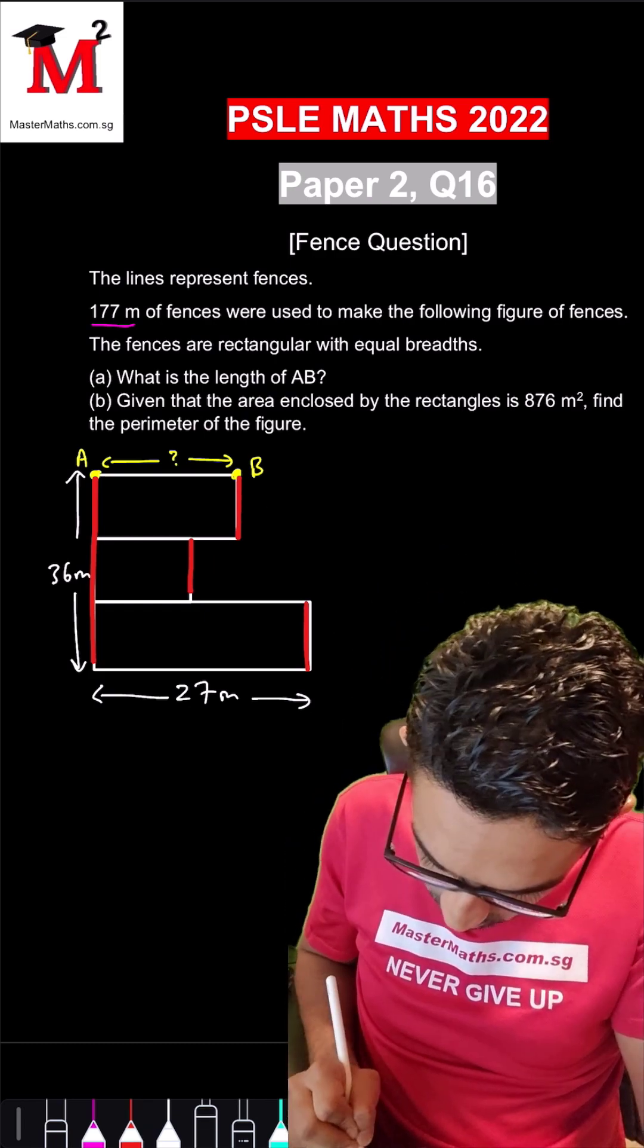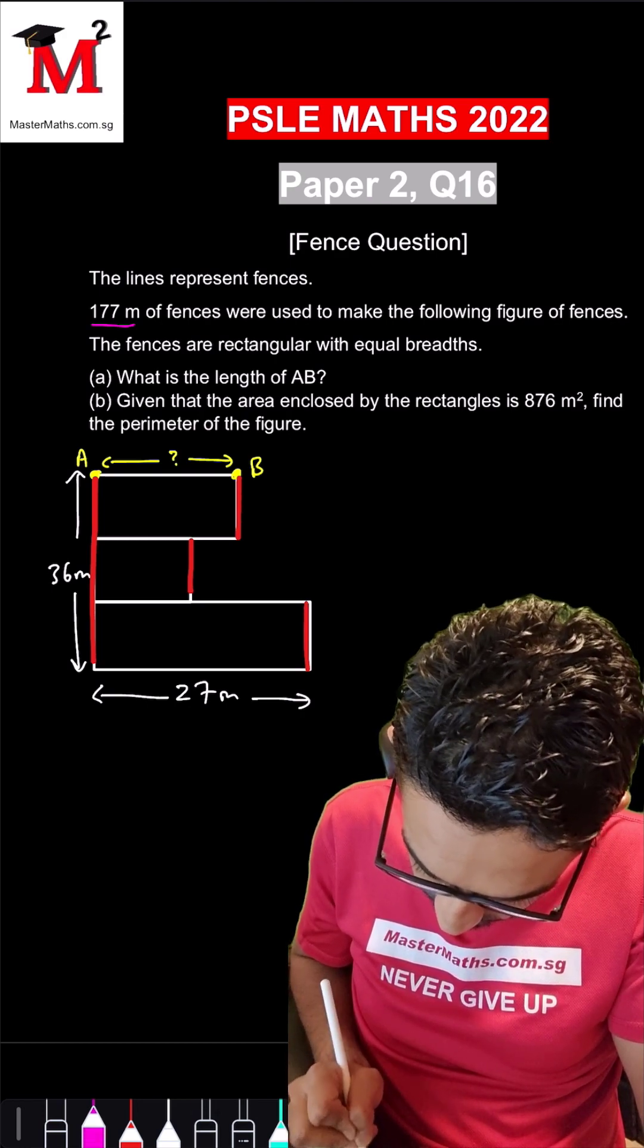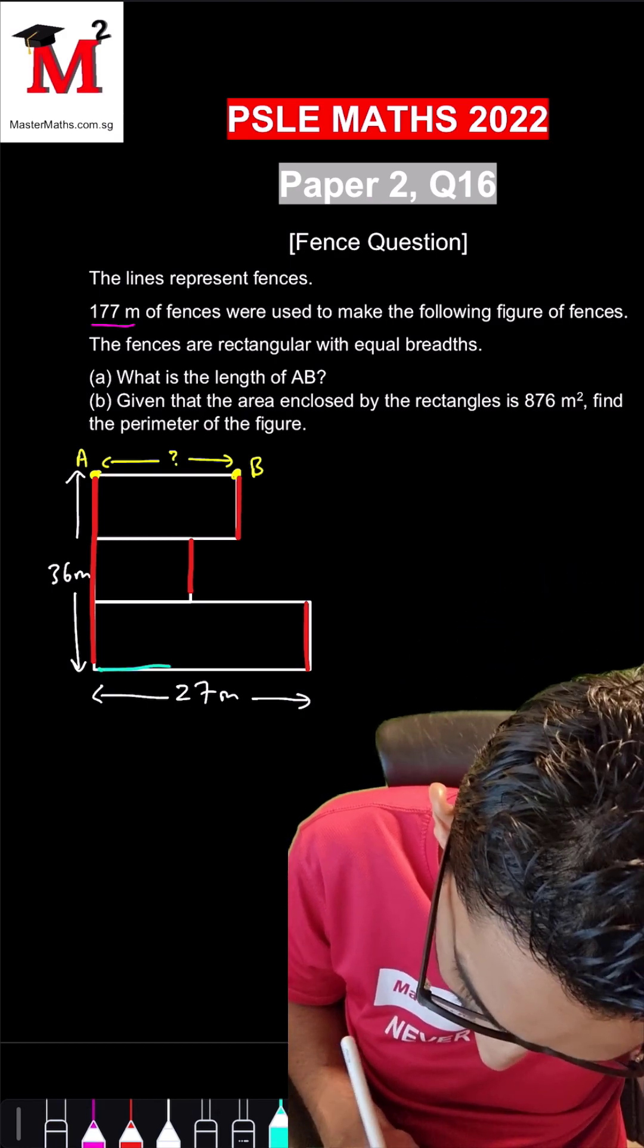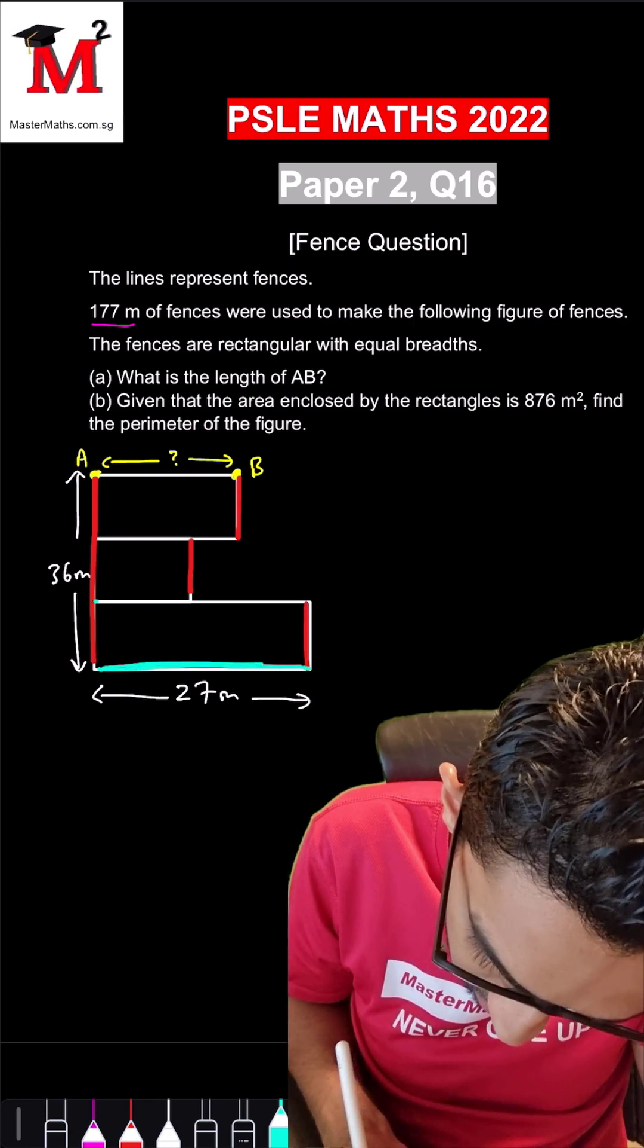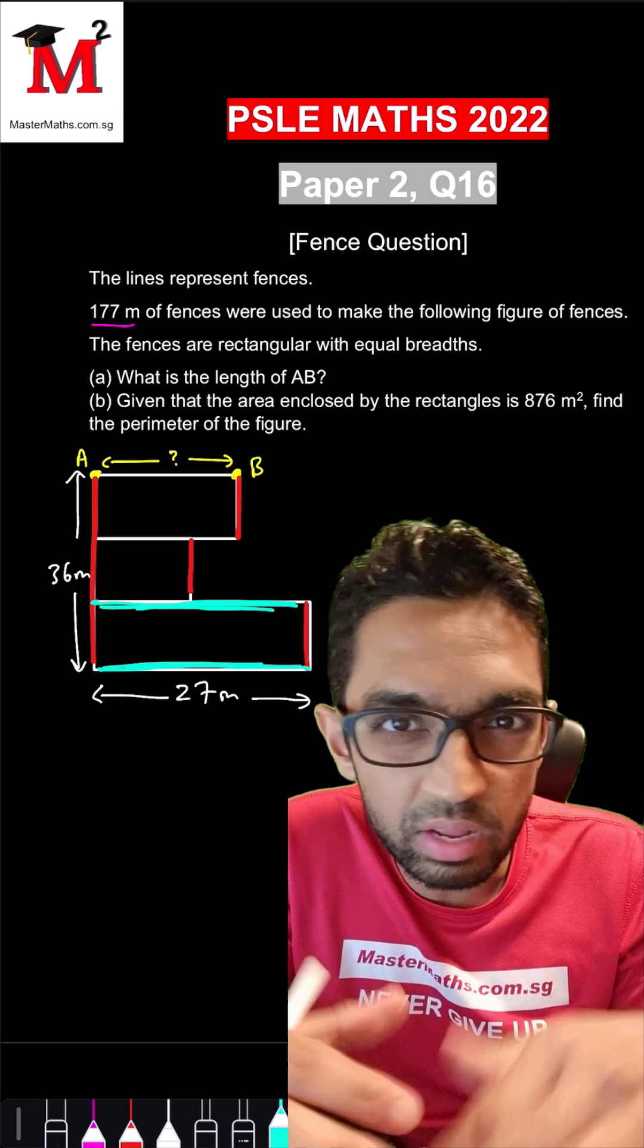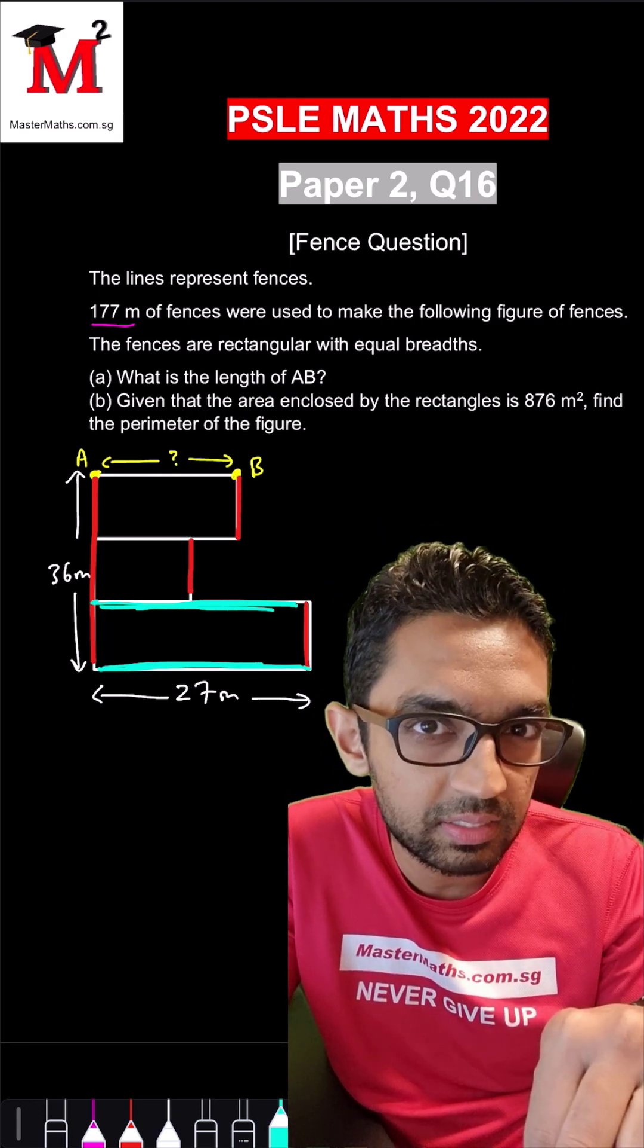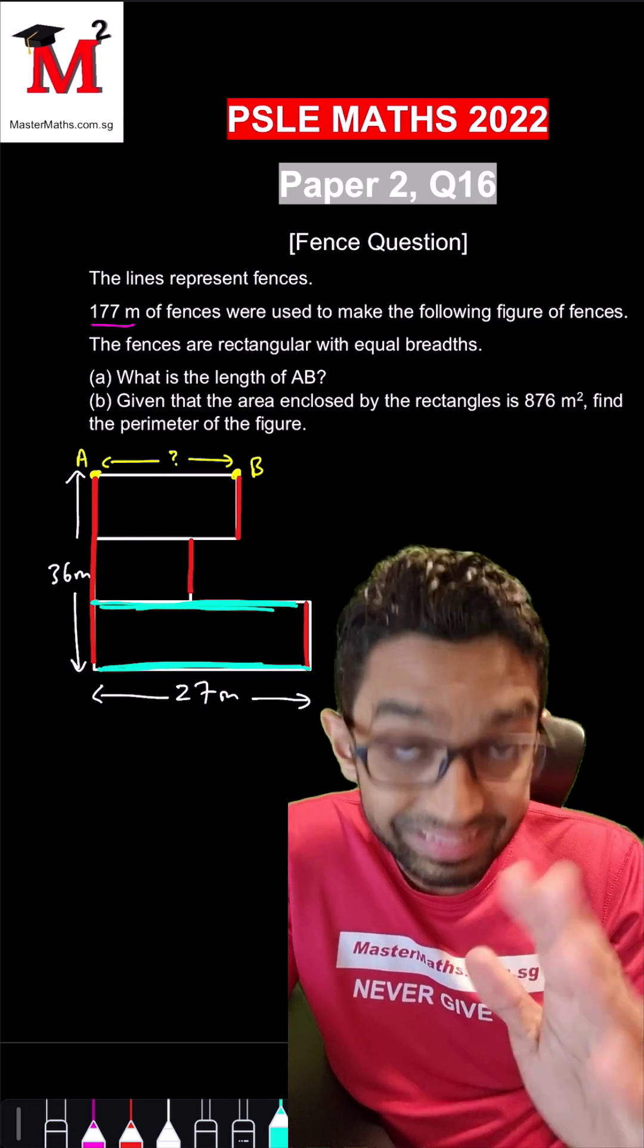Now another great thing about this question is that we are also given 27 meters at the bottom. 27 meters will be here as well because you have a rectangle. Then whatever is the balance is twice of AB.